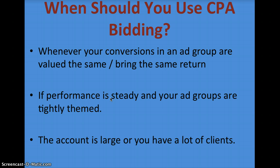When should you use CPA bidding? Basically whenever your conversions in an ad group are valued the same or bring in the same return — mostly this will be a lead generation situation. Performance should be steady and your ad groups tightly themed. You need a decent conversion volume — the minimum is 15 a month, but I'd recommend as much as you can get. Avoid the messy ad group situation we looked at. And if the account is large or you have many clients and don't have time for detailed CPC bidding and think you could be missing conversions, then definitely give CPA bidding a try.